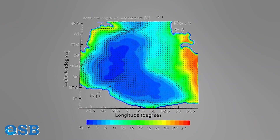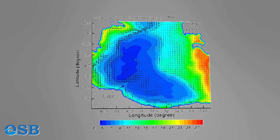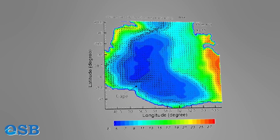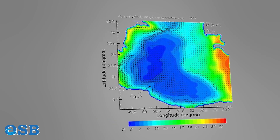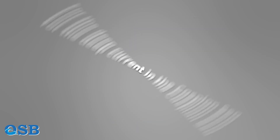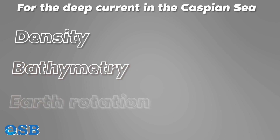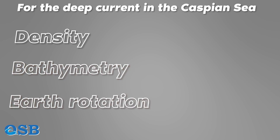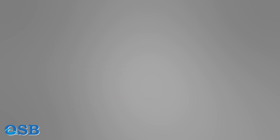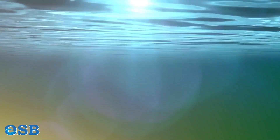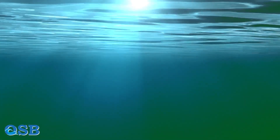Interestingly, this dense flow reaching the Iranian coast near the Sephidrad Cape shows interesting behaviors — the current separates from the coast and forms two eddies due to Earth's rotation. So for the deep current in the Caspian Sea, three factors play significant roles: density, bathymetry, and Earth's rotation.